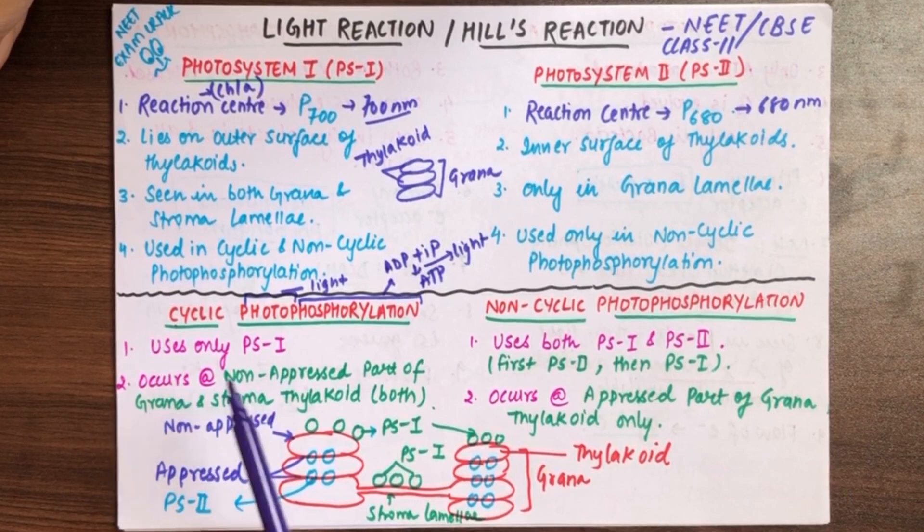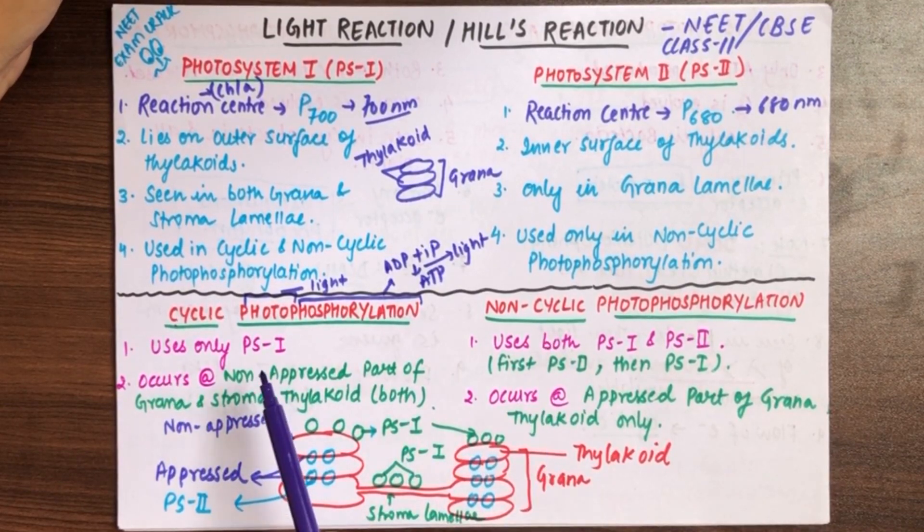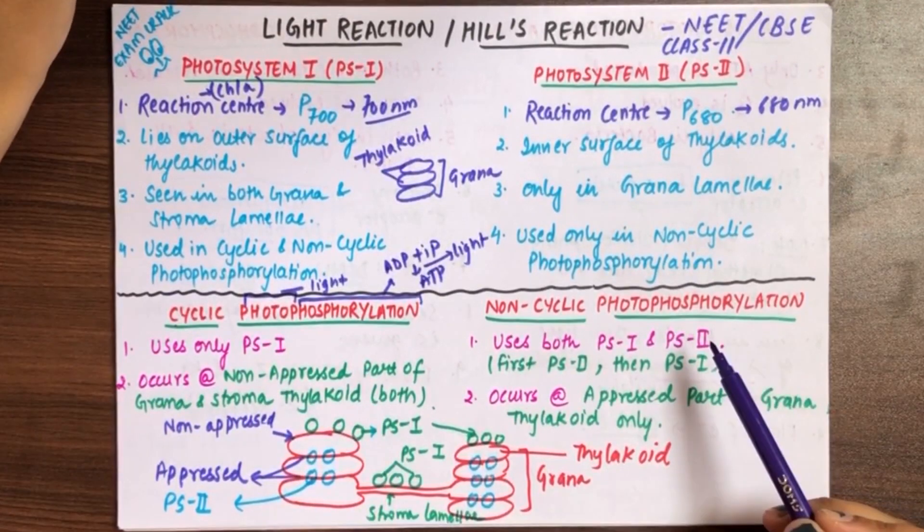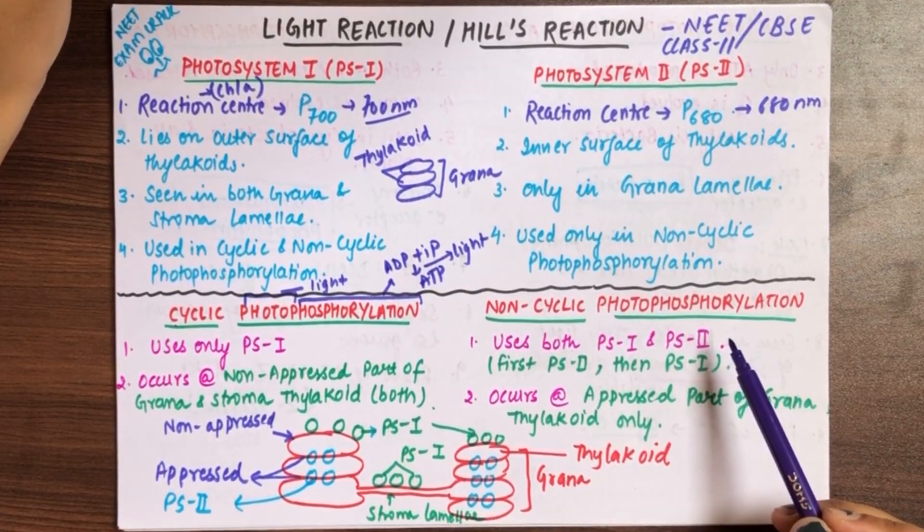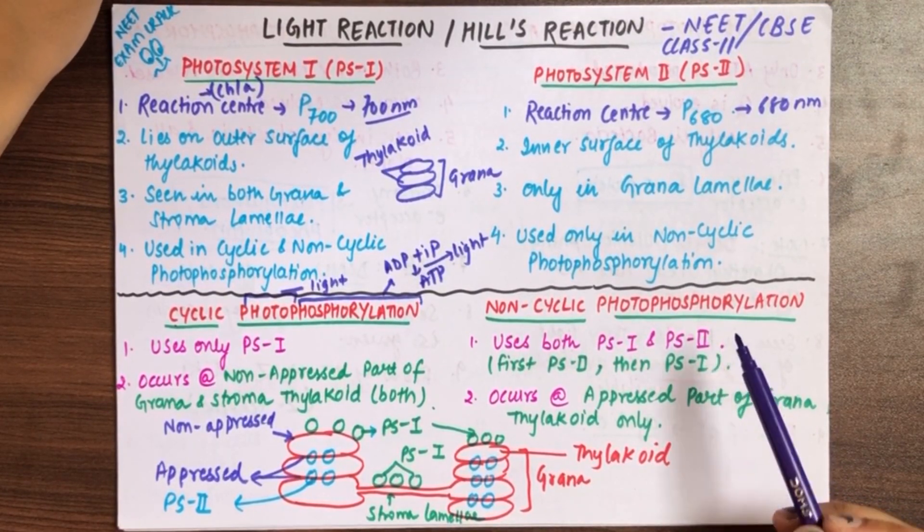These are two types. One is cyclic and another one is non-cyclic. First, you can see cyclic only PS1 is involved. Non-cyclic, both PS1 and PS2 are involved.